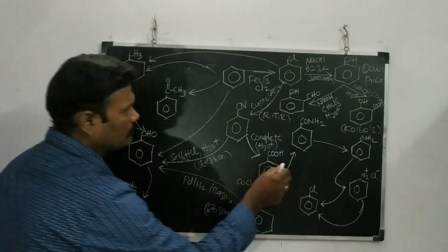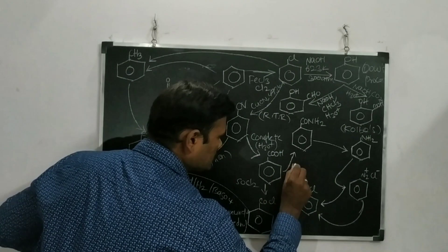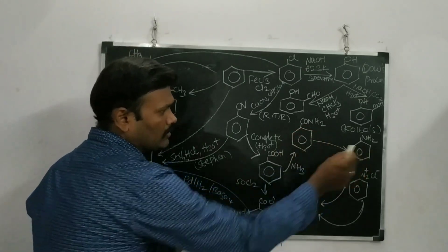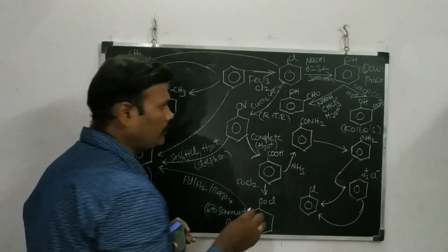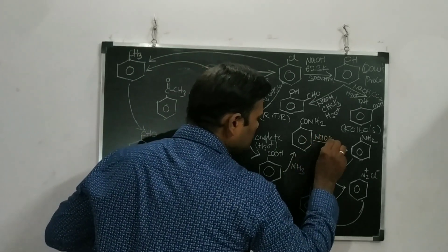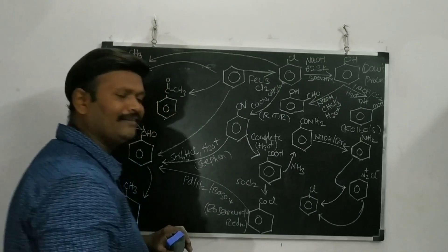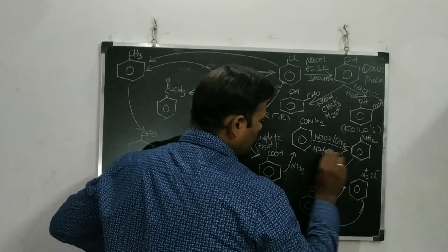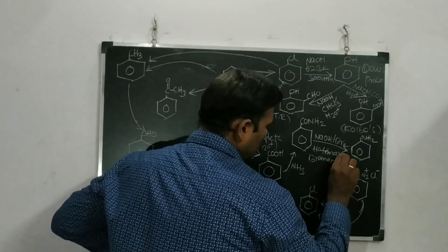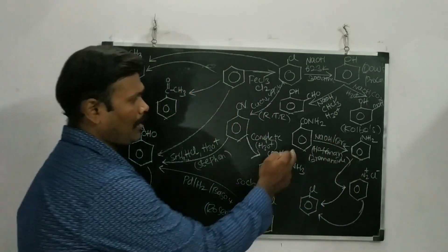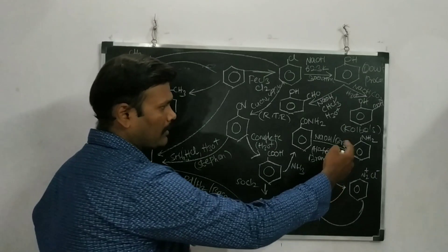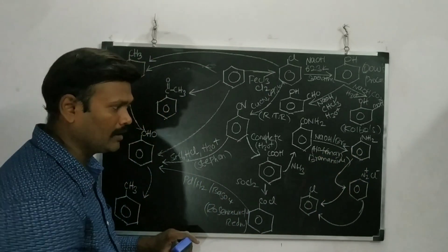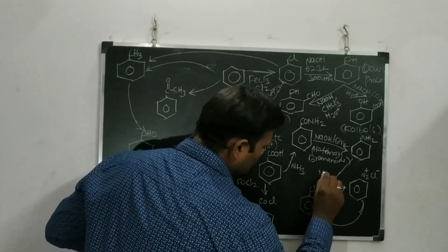From benzoic acid, addition of ammonia converts it into an amide. The amide is then converted to an amine using NaOH along with Br2. This is the Hoffmann bromamide degradation — converting an amide to an amine with one carbon less, using Hoffmann bromamide degradation.